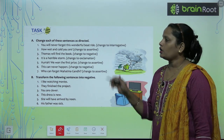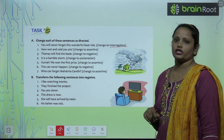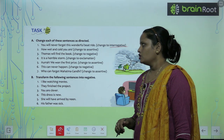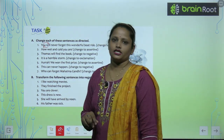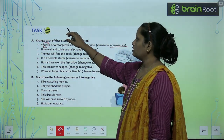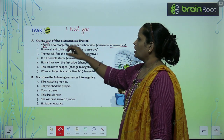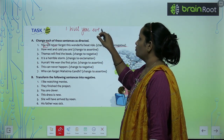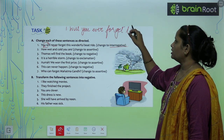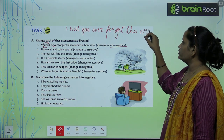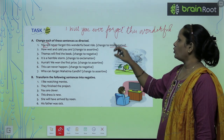Now let's quickly do this exercise — change each of the sentences as directed. The first one is: 'You will never forget this wonderful boat ride.' Change it to interrogative. So humne padha tha ki subject aur auxiliary verb ka jo place hai, woh hume change karna chahiye. To kya banega? 'Will you ever forget this wonderful boat ride?'